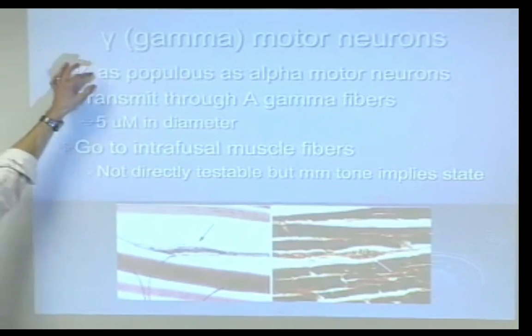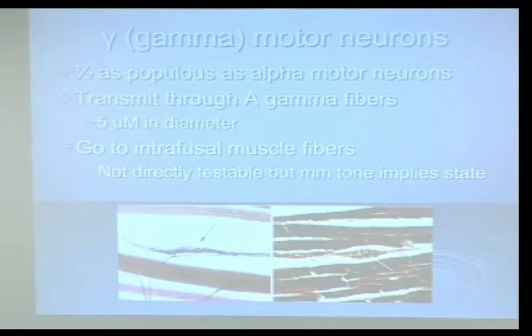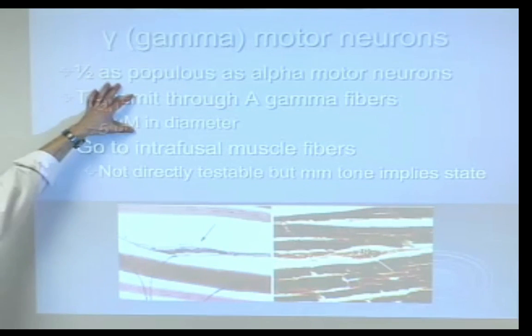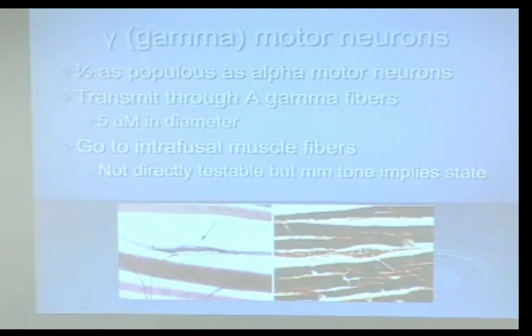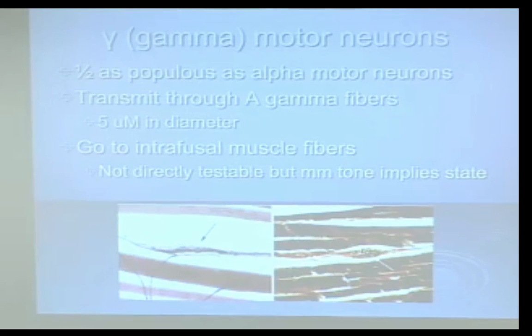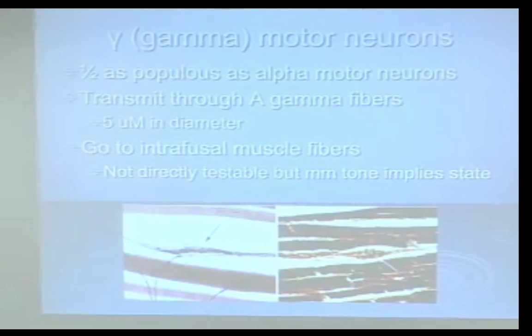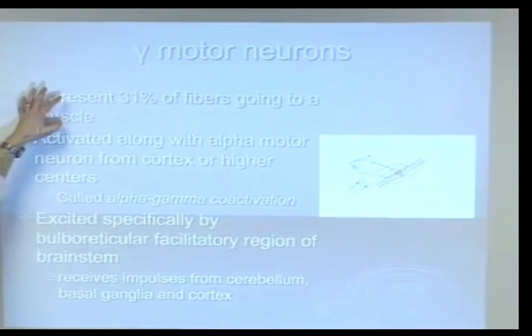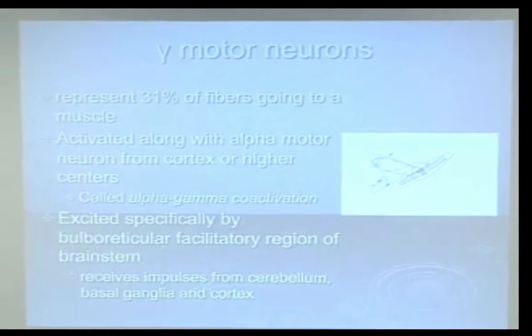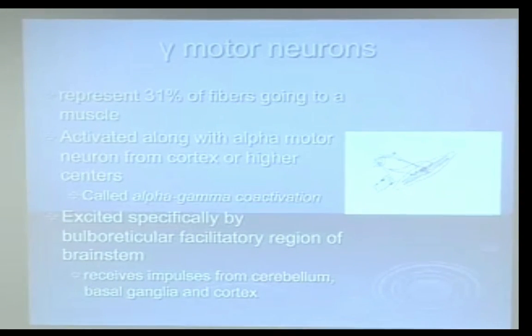Gamma motor neurons are only half as numerous as alpha motor neurons, but we still have a lot of them. They transmit through gamma fibers, which are a bit smaller, and they go to the spindles. These are the neurons we're influencing a lot when we insert a needle into a muscle — we're changing spindle gain. In fact, they make up one-third of the peripheral nerve going to the muscle. That's a lot.